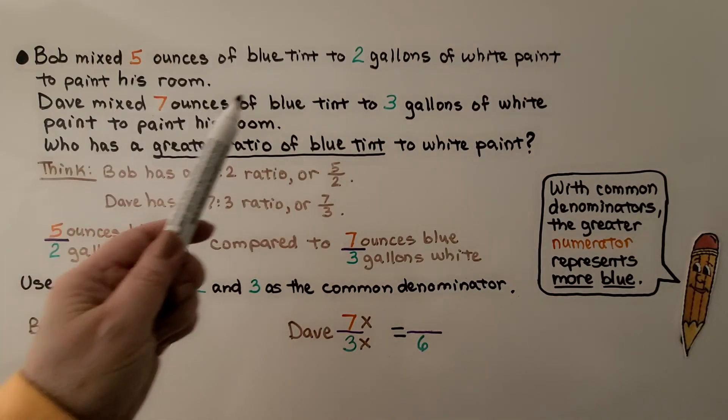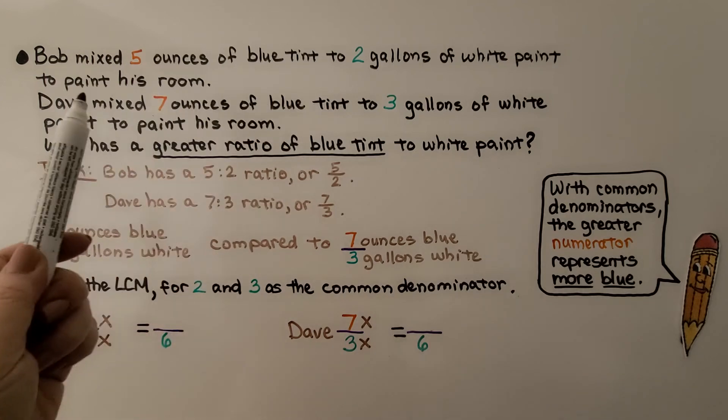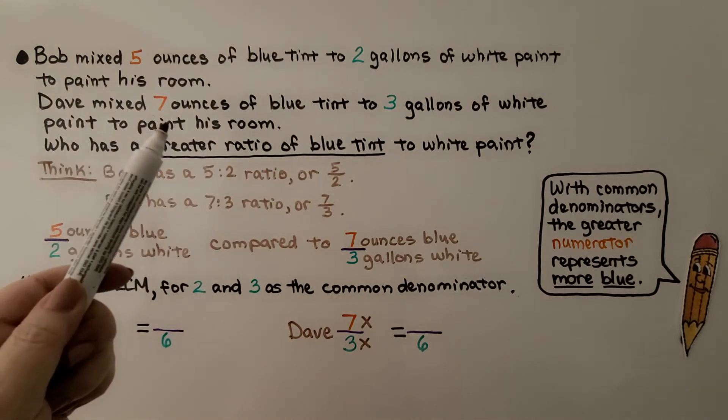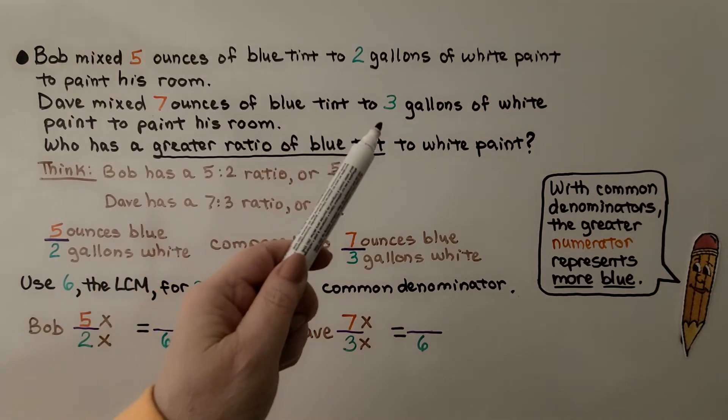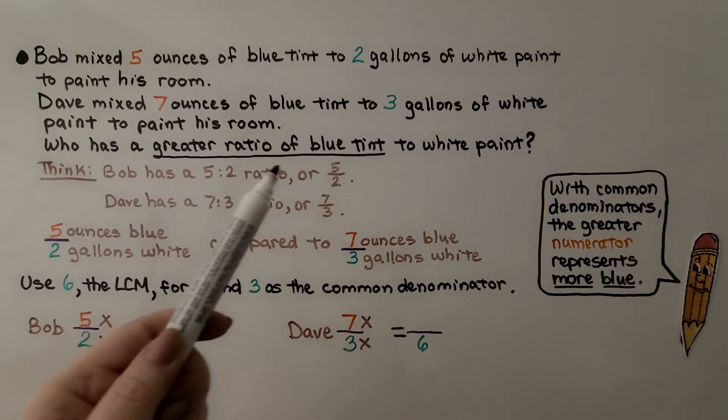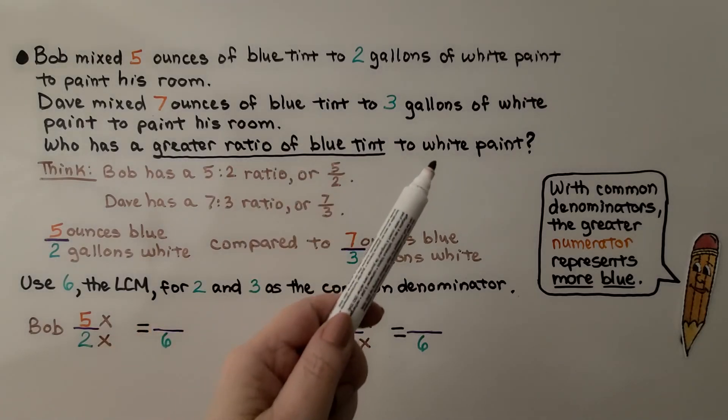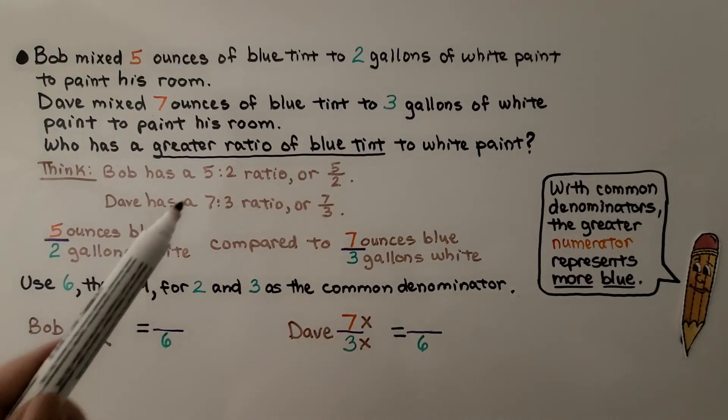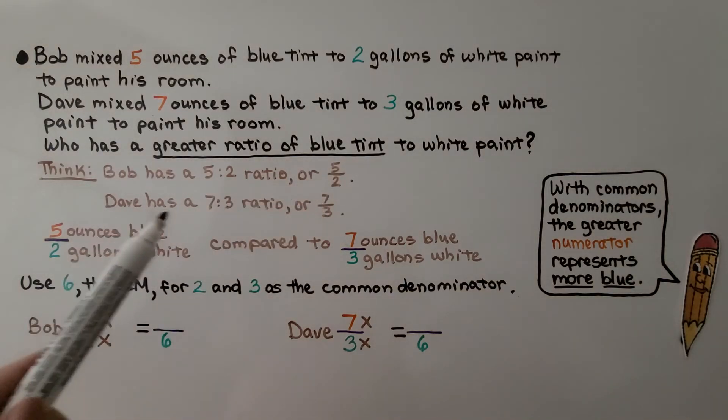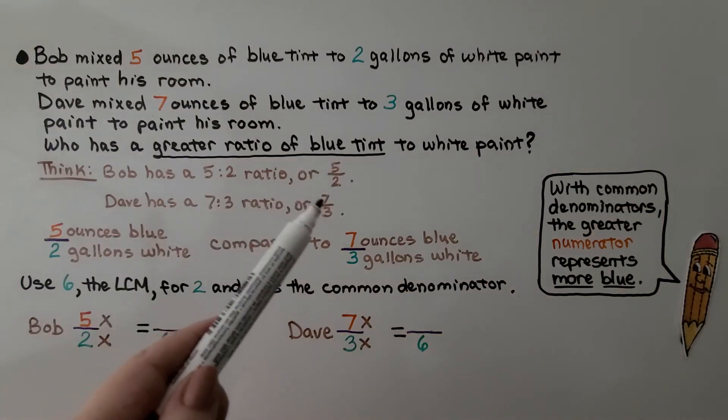Bob mixed 5 ounces of blue tint to 2 gallons of white paint to paint his room. And Dave mixed 7 ounces of blue tint to 3 gallons of white paint to paint his room. Who has a greater ratio of blue tint to white paint? So we think Bob has a 5 to 2 ratio, or 5 halves. Dave has a 7 to 3 ratio, or 7 thirds.